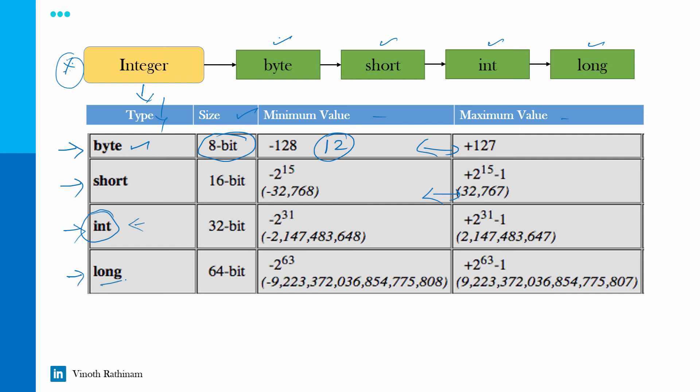And then comes the fourth one long, mostly used for the scientific calculation that is distance between the planets. So at that time, you need a very big number range to save the value, then you can use long. In automation, the mobile number we can save using the long, especially in India, it starts with 9. So Indian mobile numbers will not fall within this range. So we have to choose long at that time.